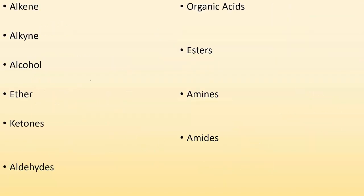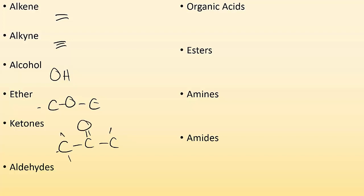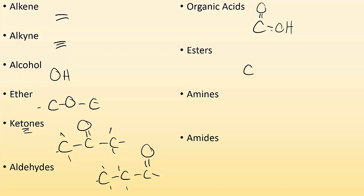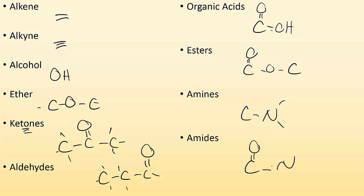Quick review: alkenes have a double bond; alkynes have a triple bond; alcohols have OH groups; ethers have an oxygen in the middle separating two carbon chains; ketones have a double bond O in the middle of the chain; aldehydes have a double bond O on an end carbon; organic acids have C double bond O with an OH; esters have C double bond O, then O, with a carbon chain replacing the H; amines have a nitrogen on the chain; amides have a double bond O next to an amine group. Some of this is memorization, but you need to look at the structure and determine what family it belongs to. Hope you found that helpful — see you in class.